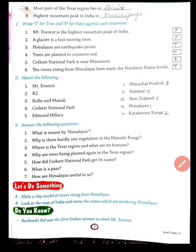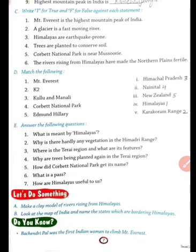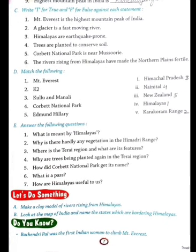Next page: most part of the Tarai region lies in Shivalik, S-H-I-V-A-L-I-K. The highest mountain peak in India is Kanchengjunga — the correct spelling is K-A-N-C-H-E-N-J-U-N-G-A, Kanchengjunga.